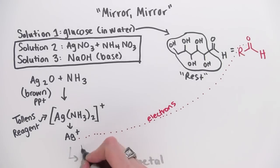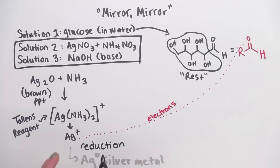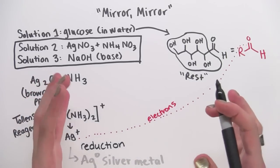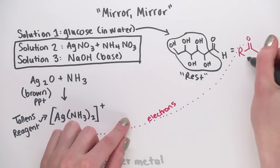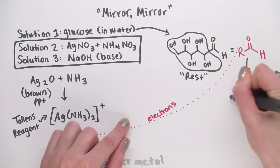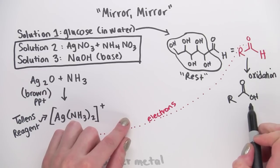Now this process is called reduction. And whenever something is reduced, something else is oxidized. So the glucose must be getting oxidized. It becomes this. And oxygen was added here.